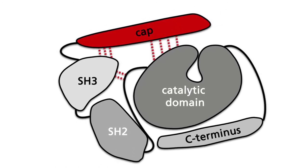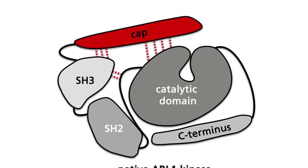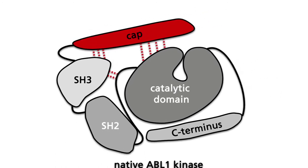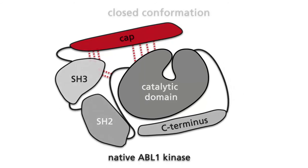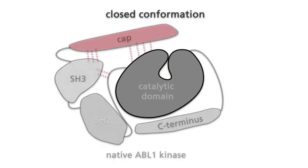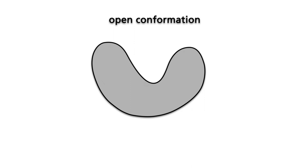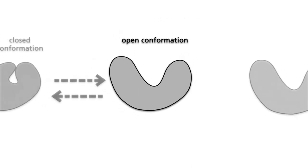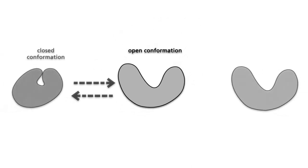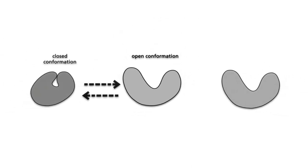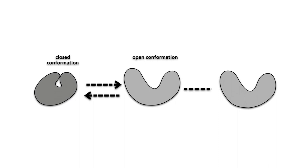The catalytic domain of the native ABL kinase can switch between two conformations: the closed and the open conformation. The closed conformation is not able to bind ATP. Only the open conformation of the catalytic domain is able to bind ATP and to allow enzymatic activity.